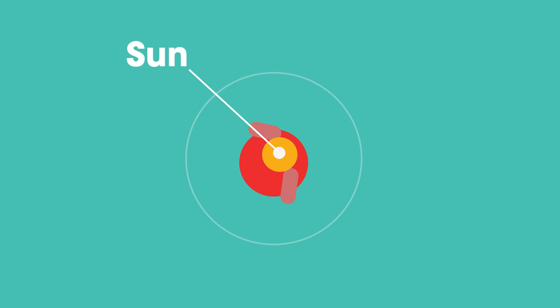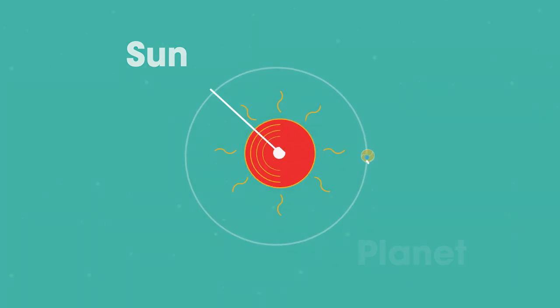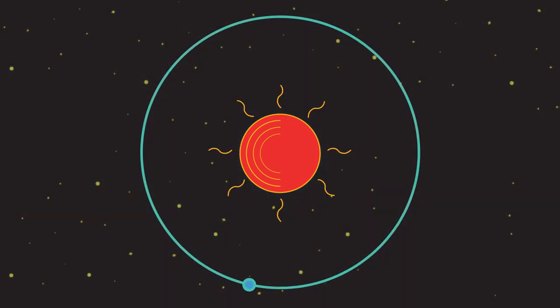Now, think of you as the sun and the ball as a planet. Without the force of gravity, the planets couldn't stay in orbit.